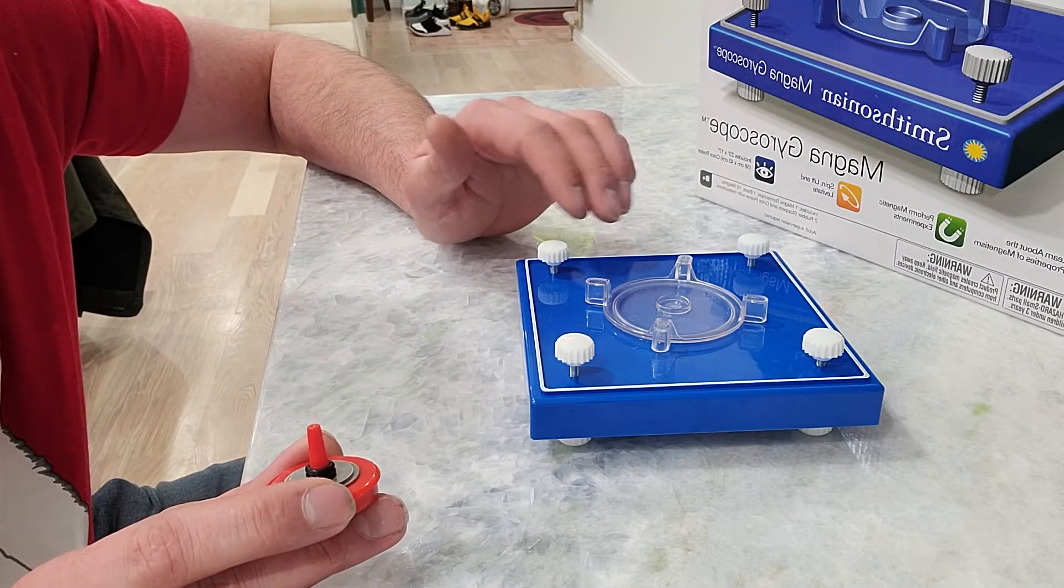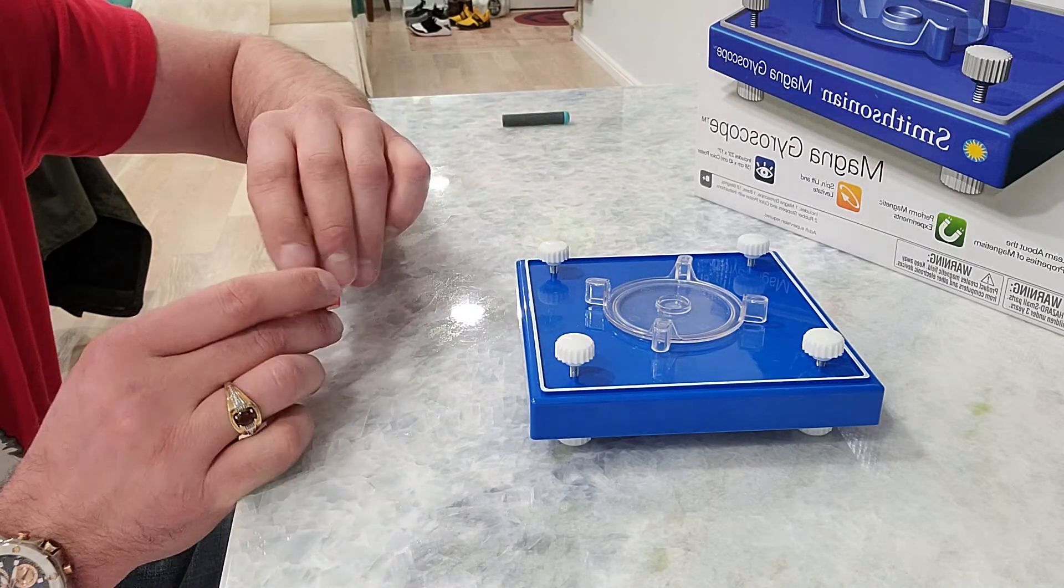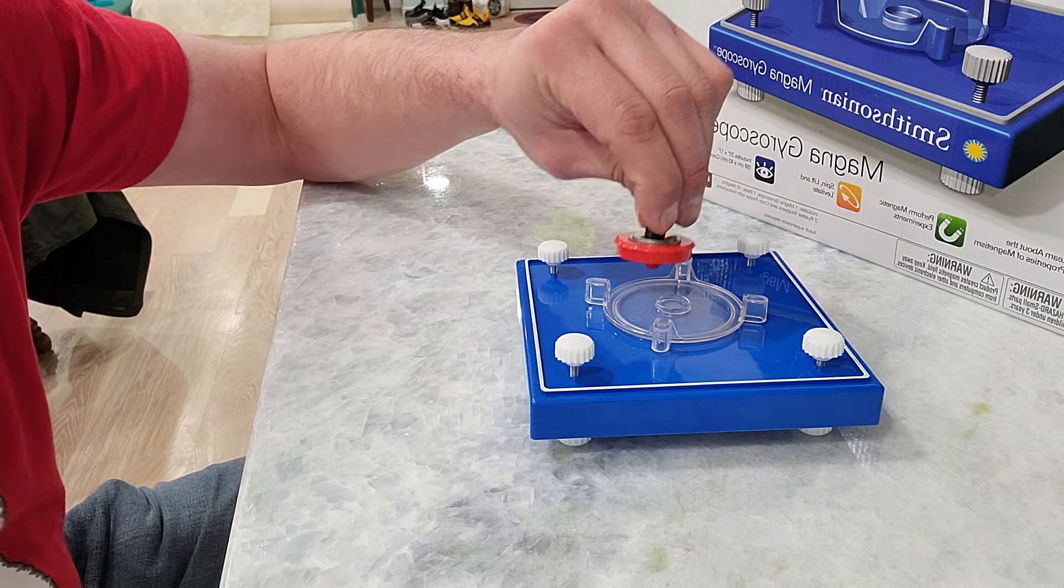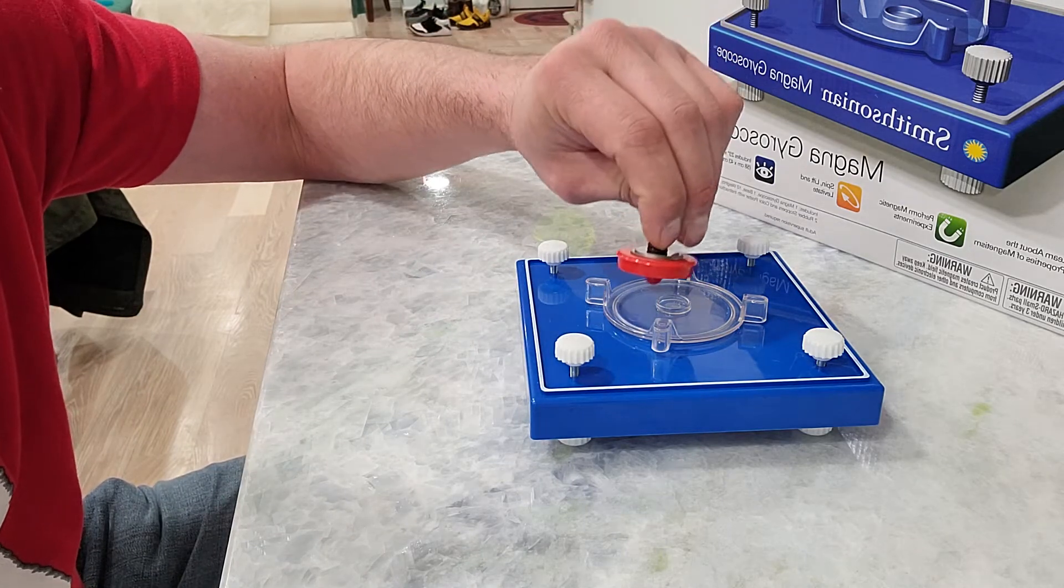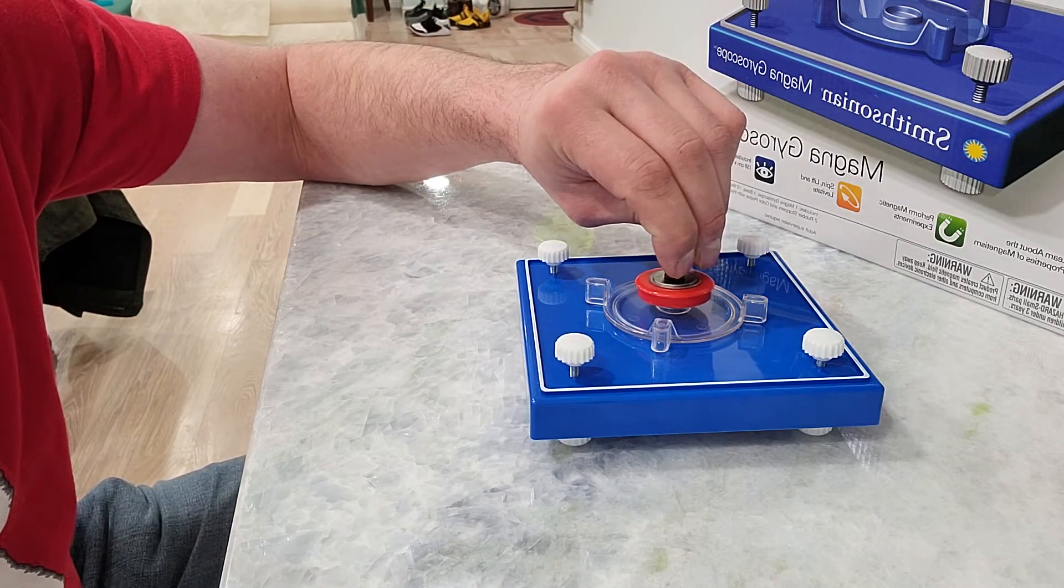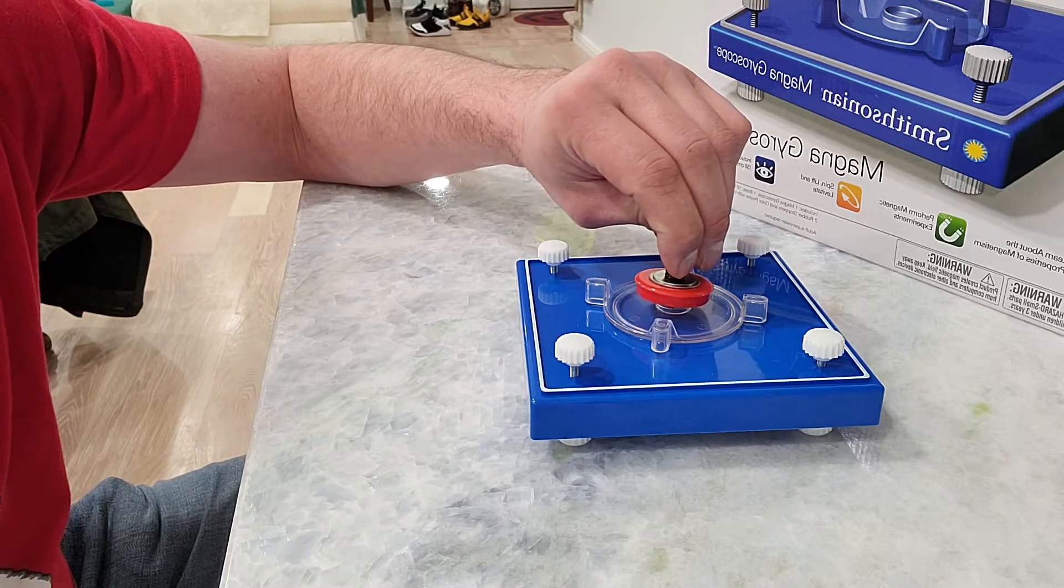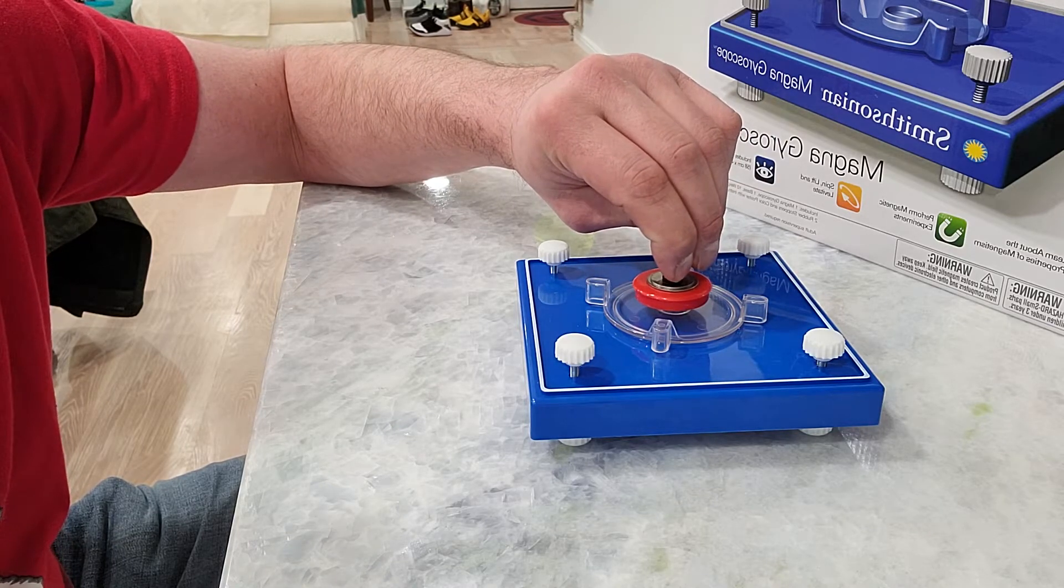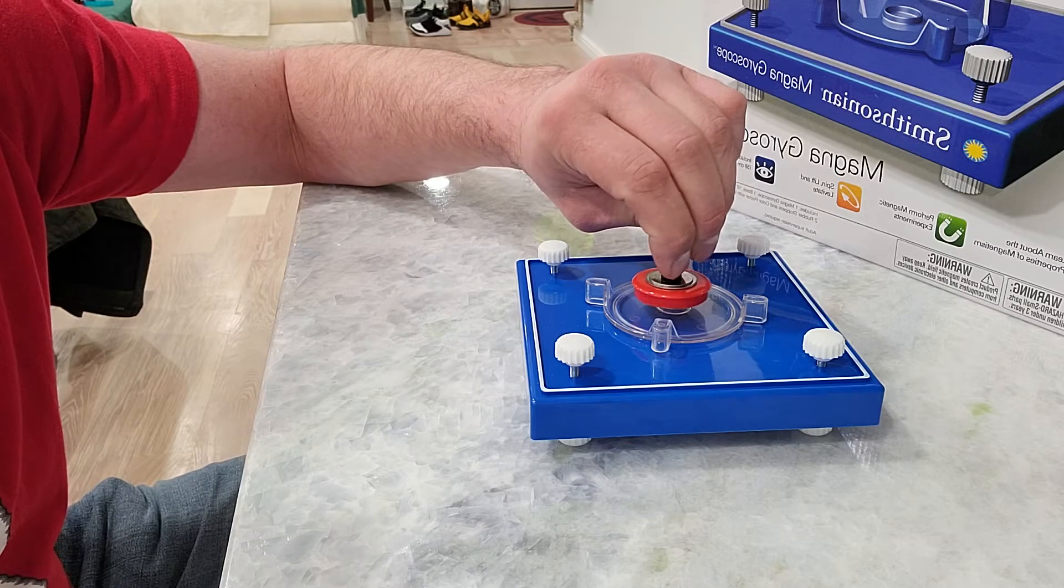Now the next part is getting this about as level as possible using these little legs. And then the third trick is how to get it to spin without flying off. So I found you don't have to spin it super fast, but you have to hold it down in the dead center and try to keep it as stable as possible to start the spin.